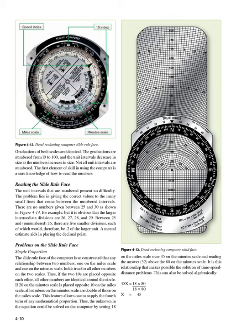Simple proportion: the slide rule face is constructed so that any relationship between two numbers — one on the miles scale and one on the minutes scale — holds true for all other numbers on the two scales. If 20 on the minutes scale is placed opposite 10 on the miles scale, all numbers on the minutes scale are double those on the miles scale. This feature allows one to supply the fourth term of any mathematical proportion, making possible the solution of time-speed-distance problems.